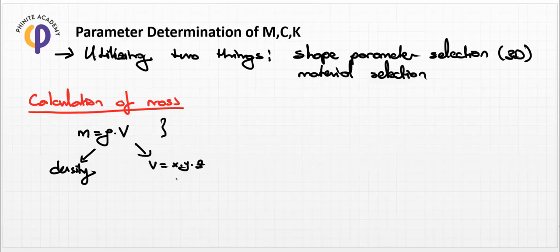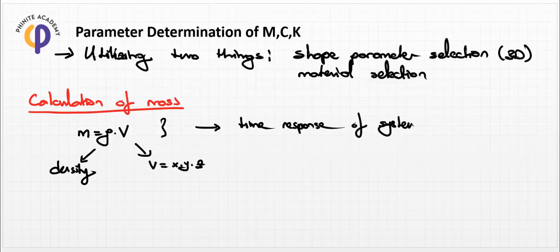If we use a higher volume value, we get a higher mass parameter. Mass directly affects the time response of the system output. We can easily set the proper value for M through selection of density and volume. In real life application, you should select what your requirements are for the mass parameter and what your design restriction parameters are.